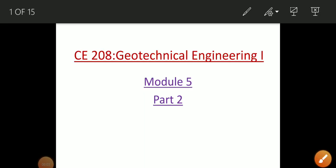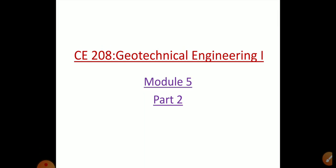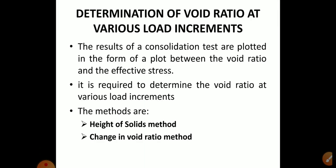Welcome to Module 5 Part 2 of Geotechnical Engineering 1. In Part 1 we discussed the consolidation process, types of consolidation, the consolidometer test, and methods to determine the magnitude and time period of consolidation. In this video we'll be discussing how to determine the void ratio at various load increments.